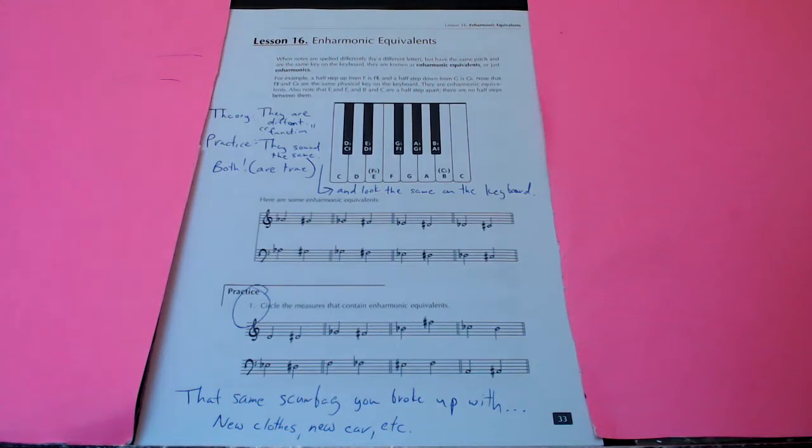When notes are spelled differently by a different letter but have exactly the same pitch and are on the same key on the keyboard, they are known as enharmonic equivalents or just enharmonics. Enharmonics is easier to say.